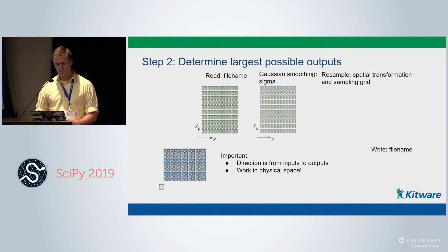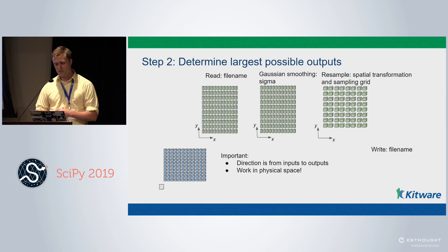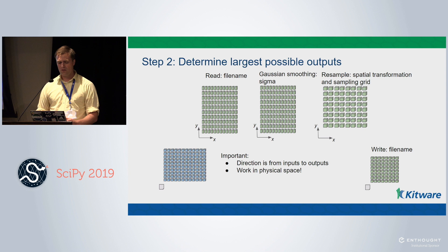In many cases it's a trivial operation — if we do something like smoothing it will have the same domain as the input. In other cases like resampling, when we change the sampling grid or location in space, the size and location of the image might change. Based on the filter parameters we get an idea of what the output will be, and then we write that to disk.